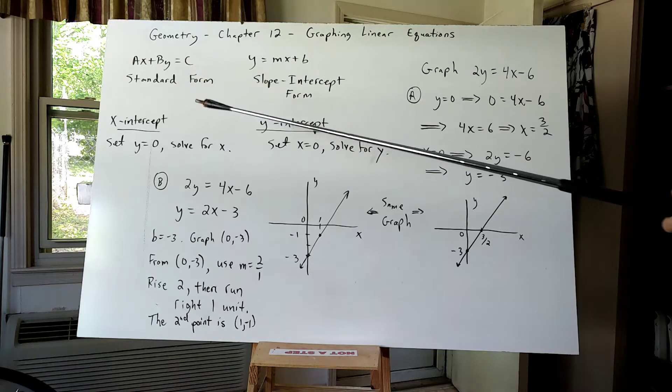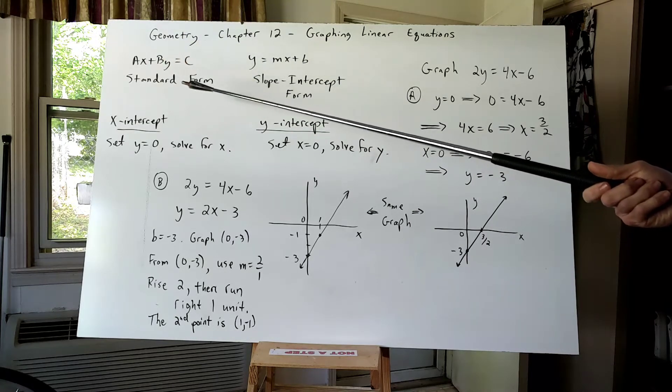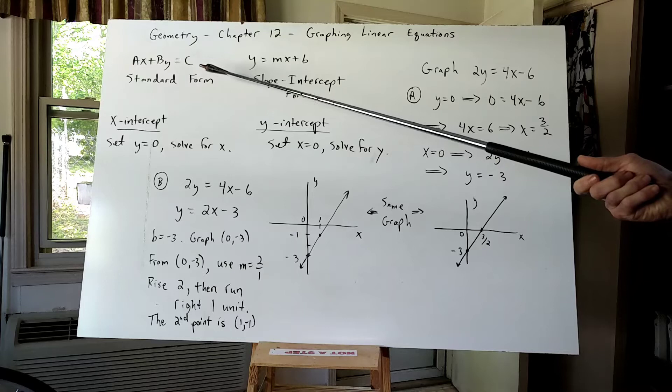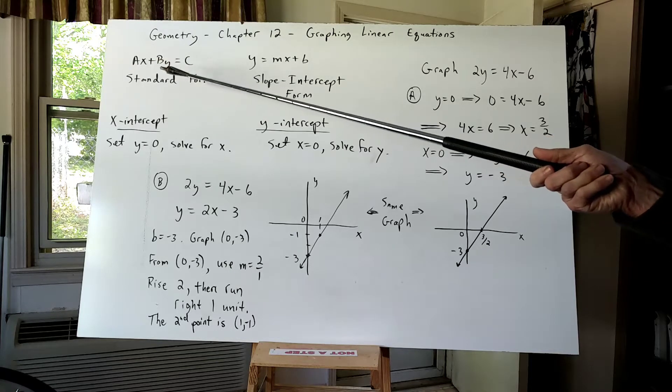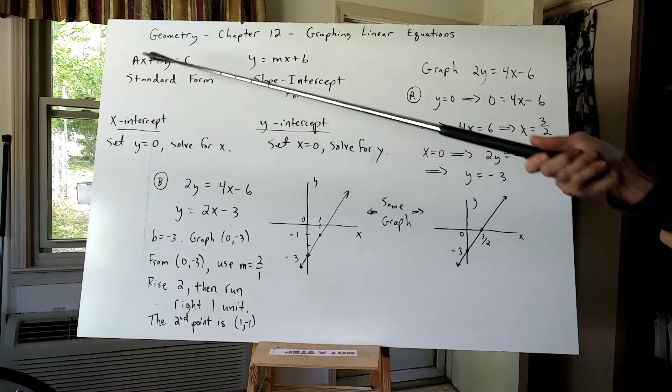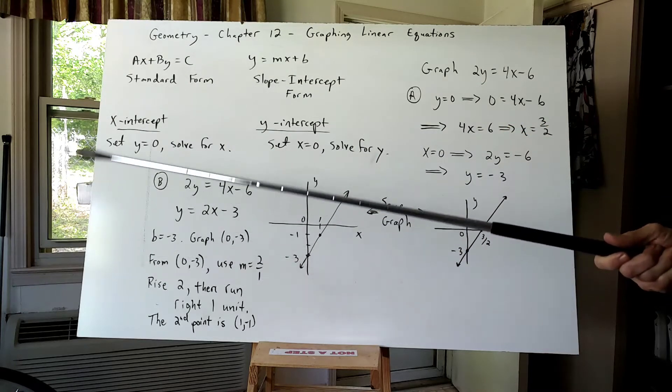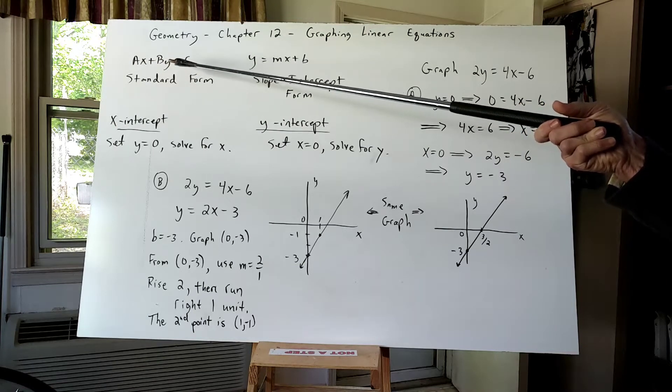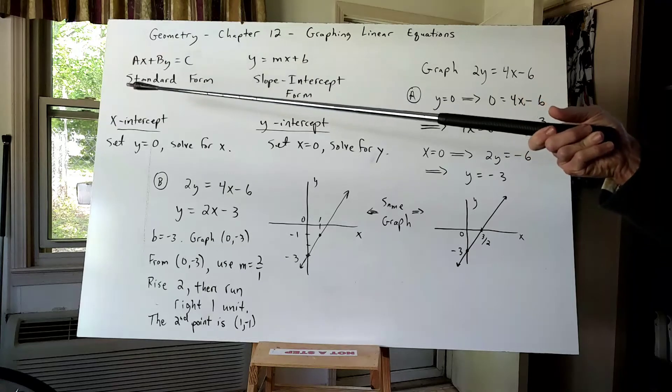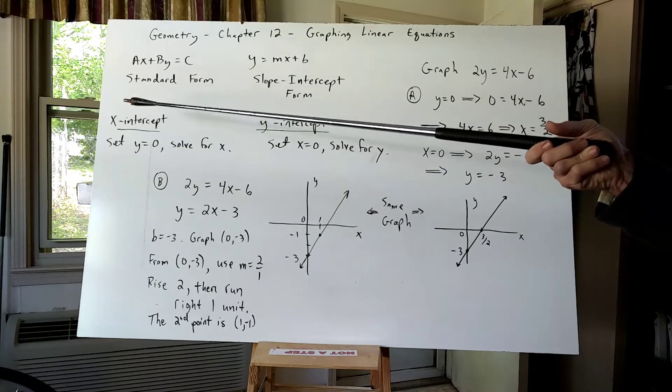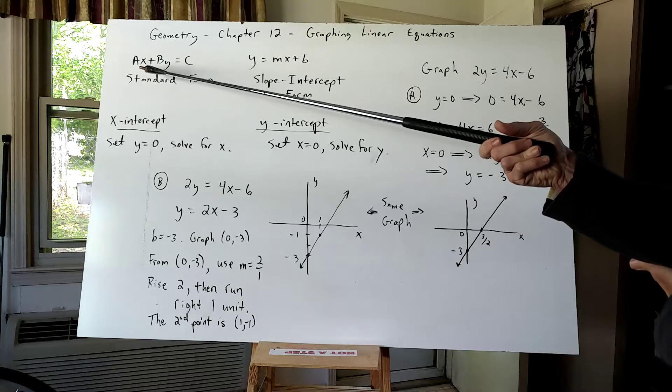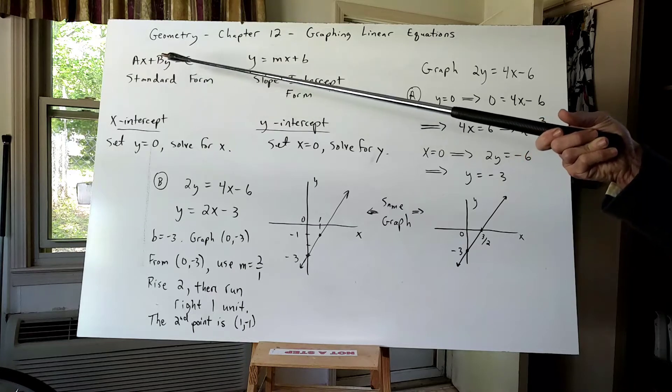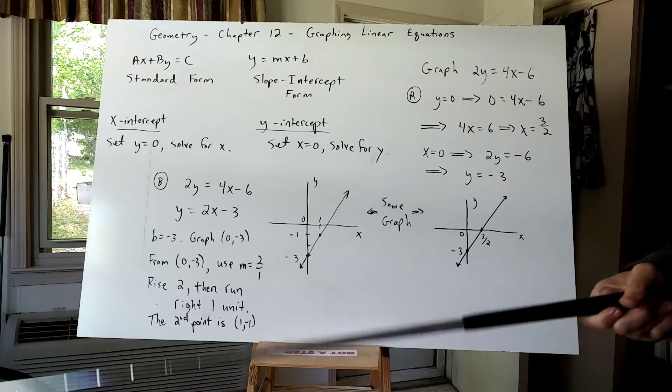To review from Algebra I, AX plus BY equals C is what we call standard form. A and B and C are real numbers, with A and B not both equal to zero. One of them can be, but not both. If the equation has only Y in it with no X term, that graph would be a horizontal line. If the equation has only variable X with no Y, the graph would be a vertical line.